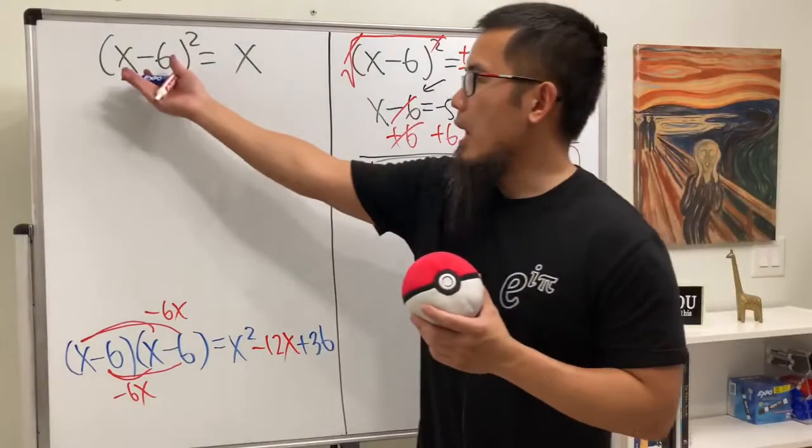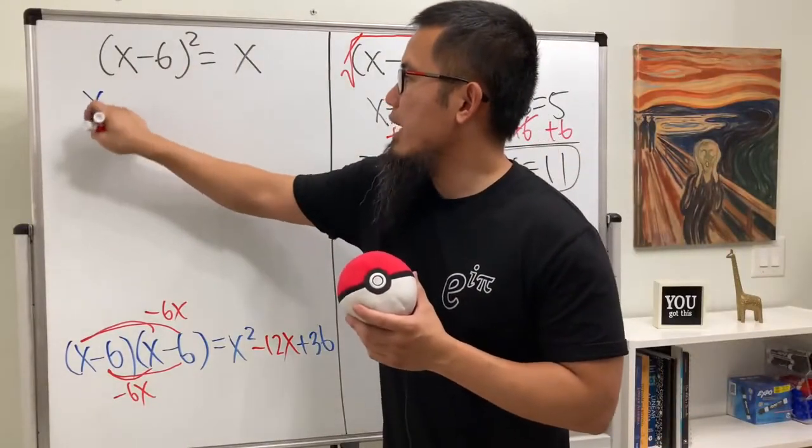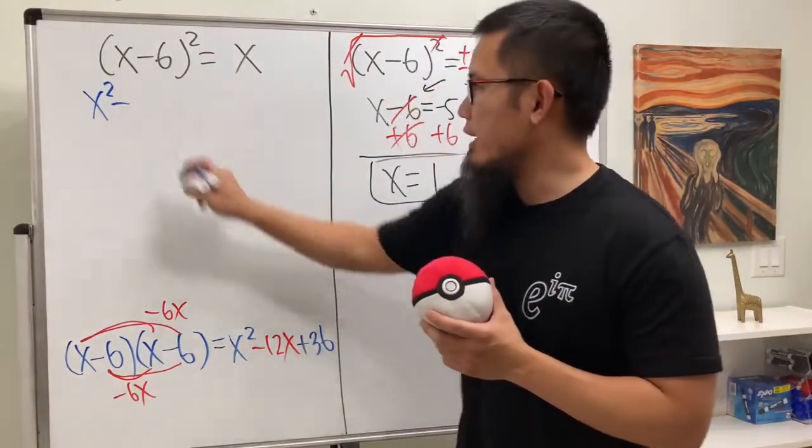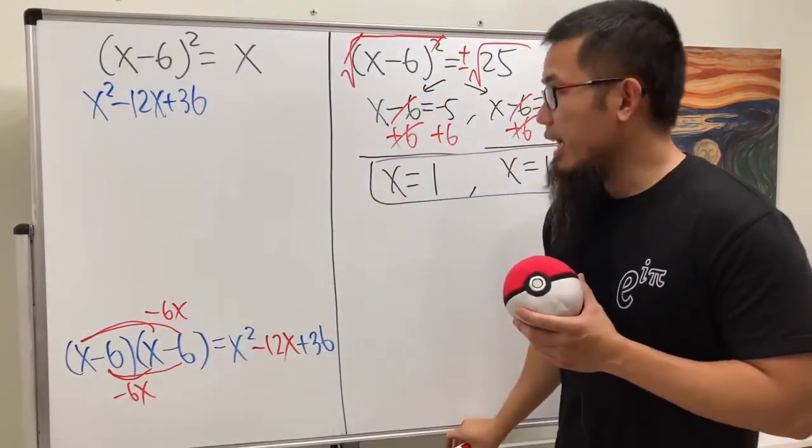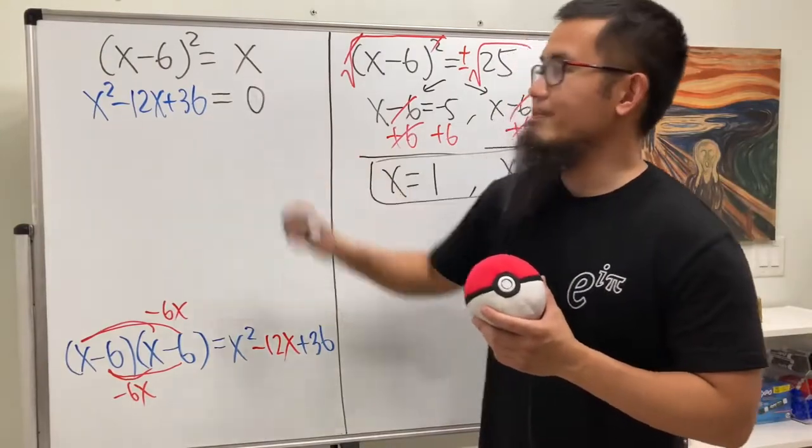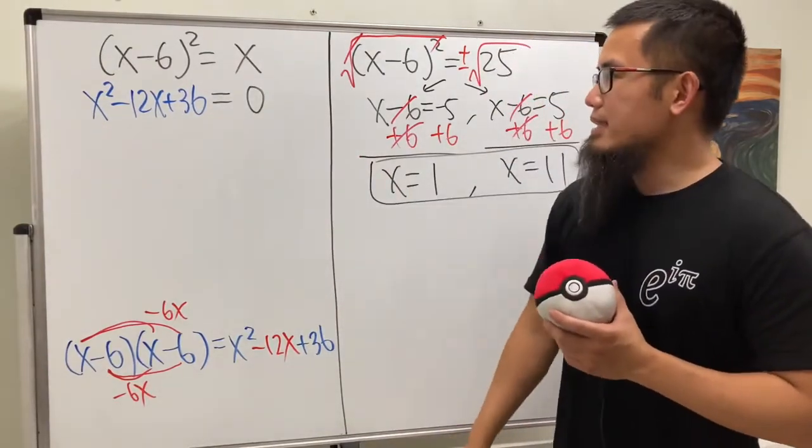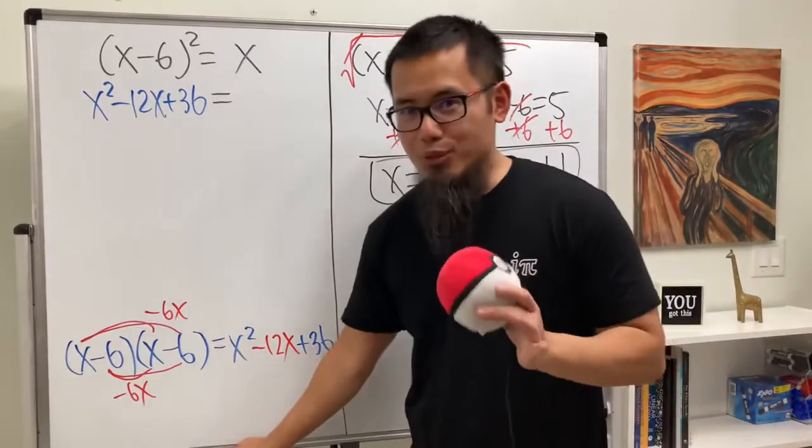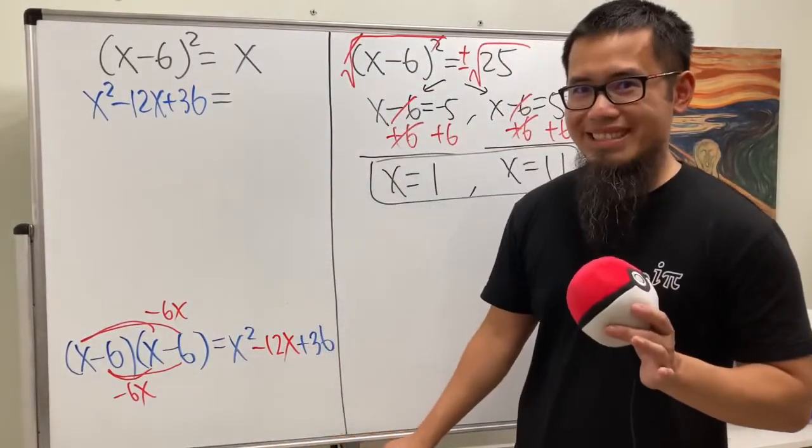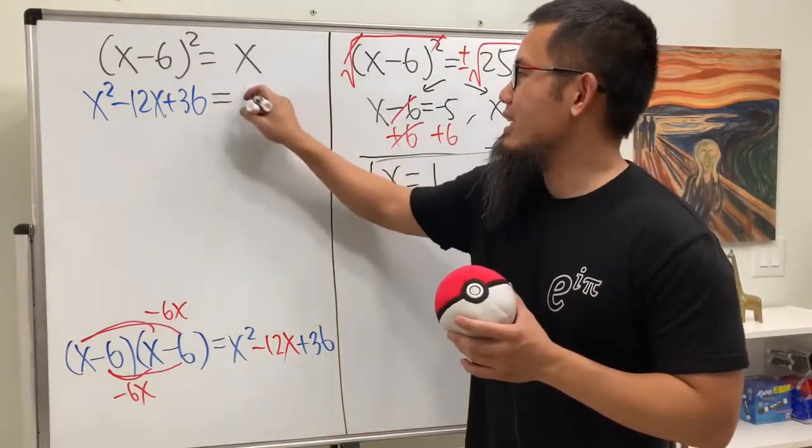So, we expand the power right here. And we get x squared minus 12x plus 36. And that's equal to 0. All right. Then, oops, no, not equal to 0. Just kidding. I wanted to have 0, but we don't have the 0 yet. Equals x.